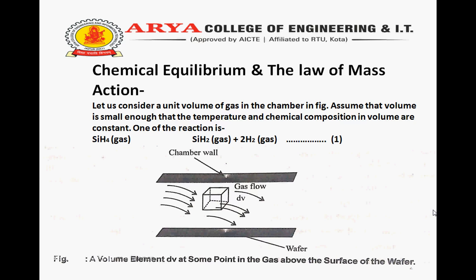Let us consider a unit volume of gas in the chamber shown in the figure. Assume that the volume is small enough that the temperature and chemical composition in that volume are constant. One of the reactions is SiH4 (gas) ⇌ SiH2 (gas) + 2H2 (gas). The double arrows indicate that the reaction proceeds in both directions.